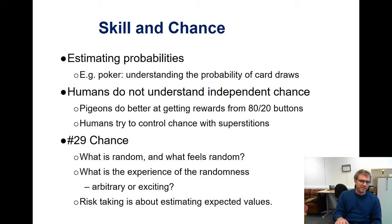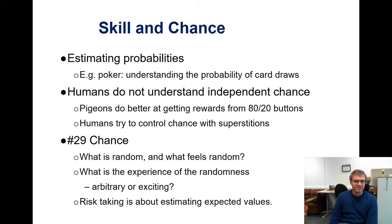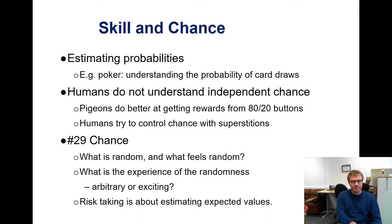Evidently, pigeons do much better at getting rewards in 80/20 probability button experiments since they don't ascribe superstitions as we do as humans. The key thing is we need to look at chance from a subjective perspective. Of course we could objectively determine the chance in a particular game, but the question is what is the experience for the player? And this relates to how randomness is distributed across the entire game — whether the player is repeatedly facing random events, and whether those are early or late in the game.